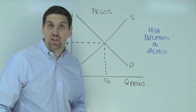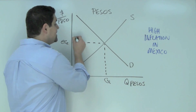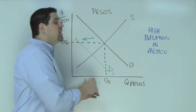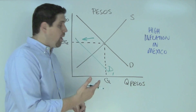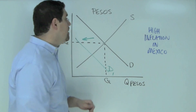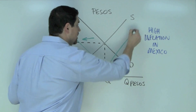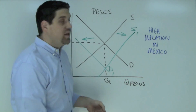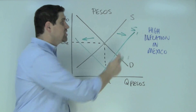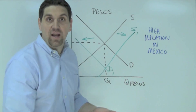In this situation, both are going to shift — the demand and the supply. The demand is definitely going to decrease. This happens because other countries do not want to buy Mexican products because the price is higher due to inflation. At the same time, the supply of Mexican pesos is going to increase. This happens because people in Mexico would prefer not to buy their own products because of higher prices, but to go buy some products from another country.